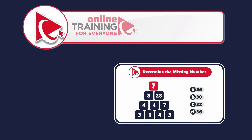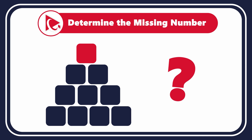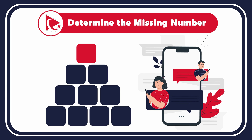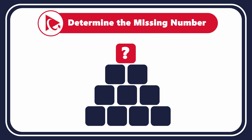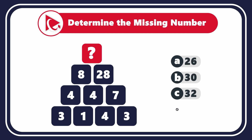Now let's put your knowledge to the test with a question for you. Take a moment to work through it independently, and don't forget to share your answer in comments below — I'll be providing feedback. You need to determine the missing number located on top of the pyramid. The number on top is calculated based on the values of other numbers. The other numbers are: 8 and 28 in one row; 4, 4, and 7 in the third row; and 3, 1, 4, and 3 in the bottom row. Select your final choice from: A: 26, B: 30, C: 32, D: 36.